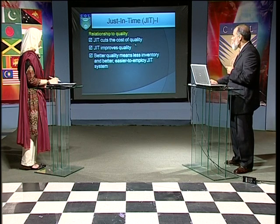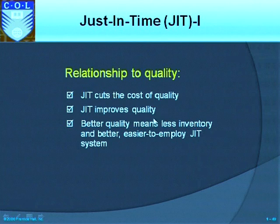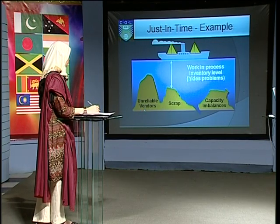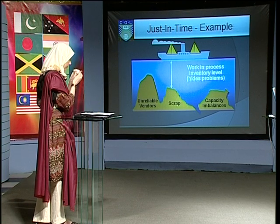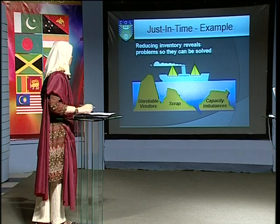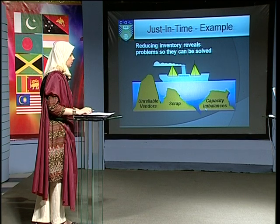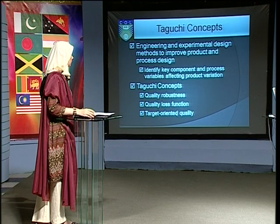Just-in-time is strongly related to quality. Just-in-time cuts the cost of quality, and just-in-time improves quality. Better quality means less inventory, which makes it easier to employ a just-in-time system. When you have unreliable vendors, high work-in-progress inventory levels hide problems — like scrap and capacity imbalances. Reducing inventory reveals those problems so they can be solved. When inventory is reduced, problems immediately come to the forefront.